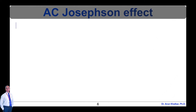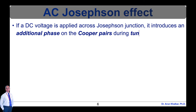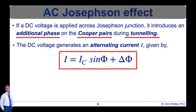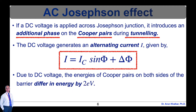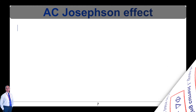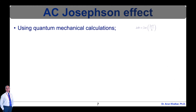Now let's see the AC Josephson effect. If a DC voltage is applied across the Josephson junction, it introduces an additional phase on the Cooper pairs during tunneling. The DC voltage generates an alternating current I = Ic·sin(φ + Δφ). Due to the DC voltage, the energies of Cooper pairs on both sides of the barrier differ in energy by 2eV, since a Cooper pair contains 2 electrons. Therefore, the energy is 2eV. In AC Josephson effect, using quantum mechanical calculations, it can be shown that Δφ = 2πt·(2eV/h).